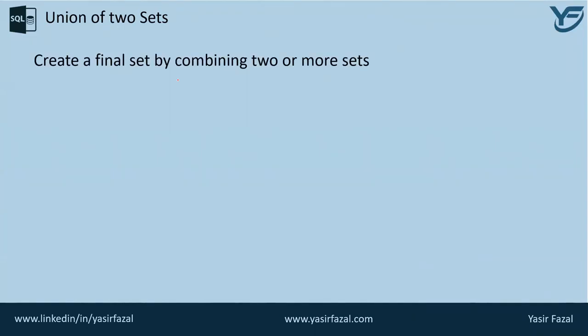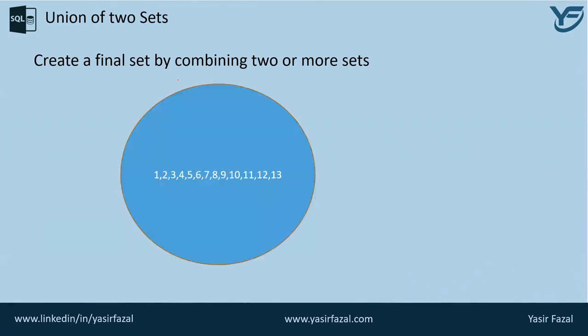By default, you need to have at least two sets in order to create a union, and the maximum can be any number. So let us suppose that we have two sets, and these two sets can contain any kind of number.